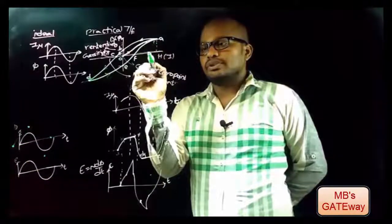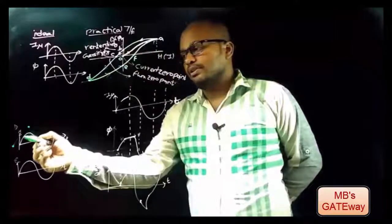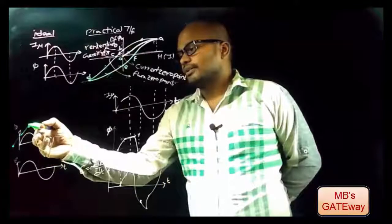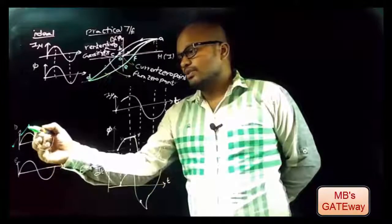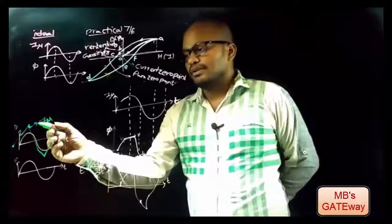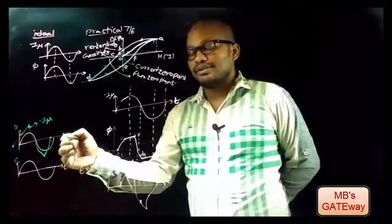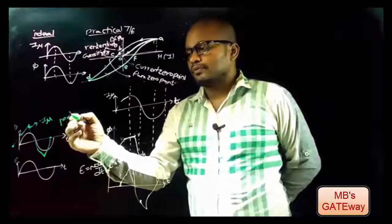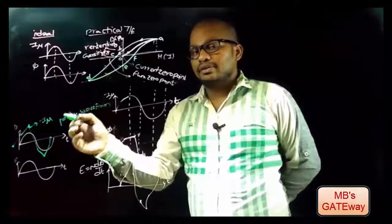When the core attains saturation, with increasing current I the flux φ becomes constant. However, observing the waveform, the flux is not constant here — meaning more current is applied. Similarly on the negative side, more current is applied. This is the magnetizing current responsible for setting up sinusoidal flux in the transformer core, which means for a transformer we need to apply a peaky waveform current to get sinusoidal flux and sinusoidal induced EMF.